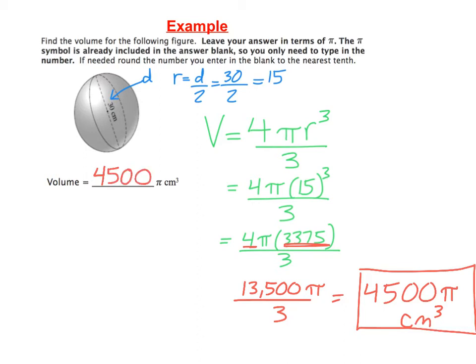Now that's how your answers are going to be kept on Schoology. But just so you know, if you did want the decimal approximation here, you could always take your calculator and do 4,500 times the pi button or just times 3.14. And that would end up being an approximate answer of 14,137.2 centimeters cubed.